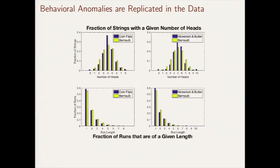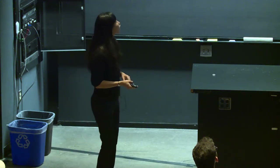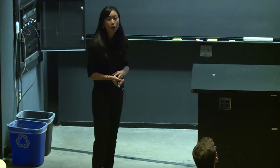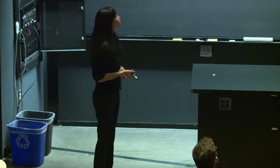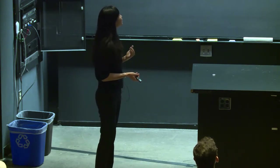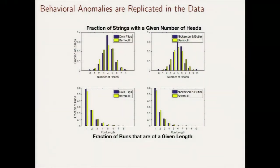On the top right, the same figure but with a previous data set from the literature as the purple bars — qualitatively, the comparison is very similar. On the bottom left, the x-axis is the run length and the y-axis is the fraction of runs of that given length. The purple bars are our data, yellow bars are what we'd expect under a Bernoulli process. The runs generated by humans are too short in expectation — they generate too few strings containing, for example, a long sequence of heads.